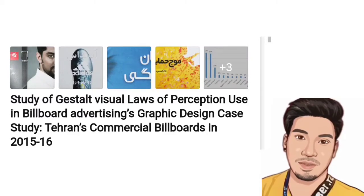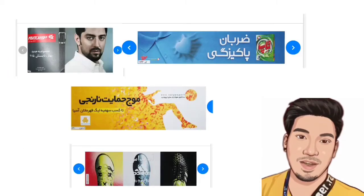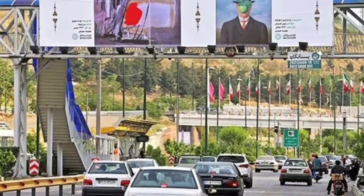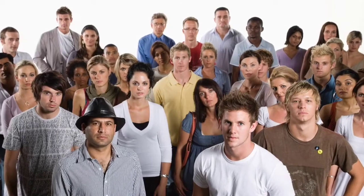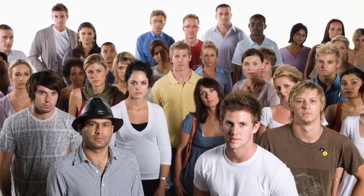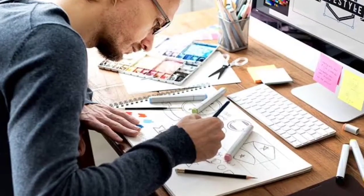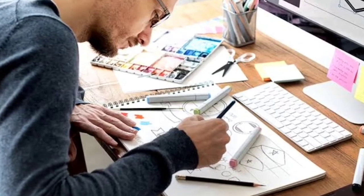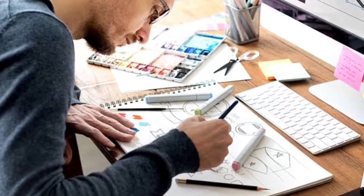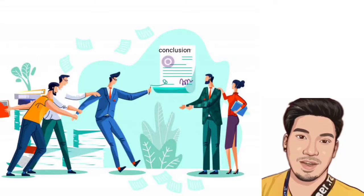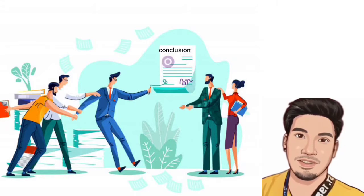In one study, 150 billboard designs were analyzed using the Delphi method — a method of arriving at a conclusion by using group consensus from a panel of experts. In this case, a panel of experts studied the billboards and came up with a group conclusion. The team of researchers figured that each Gestalt Law corresponds to specific design principles.